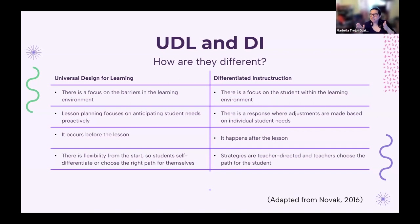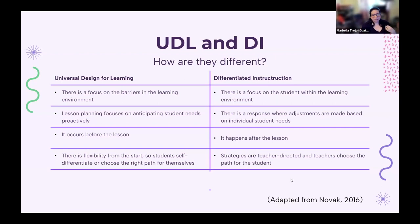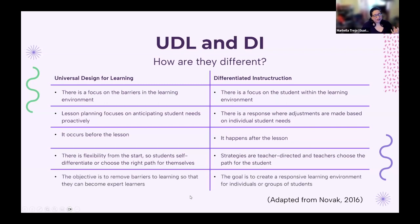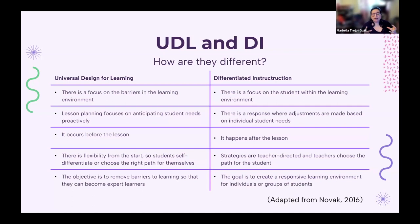With UDL, you're building in flexibility from the start so that students have the option of self-differentiation, instead of the teacher being the one who differentiates. With differentiated instruction, you're often the one making the choices — saying this is what you're going to do. With UDL, you provide options so that students are able to choose a path that helps them. The objective of UDL is to remove barriers and help students become expert learners, whereas differentiated instruction focuses on creating a responsive learning environment for individuals and groups.